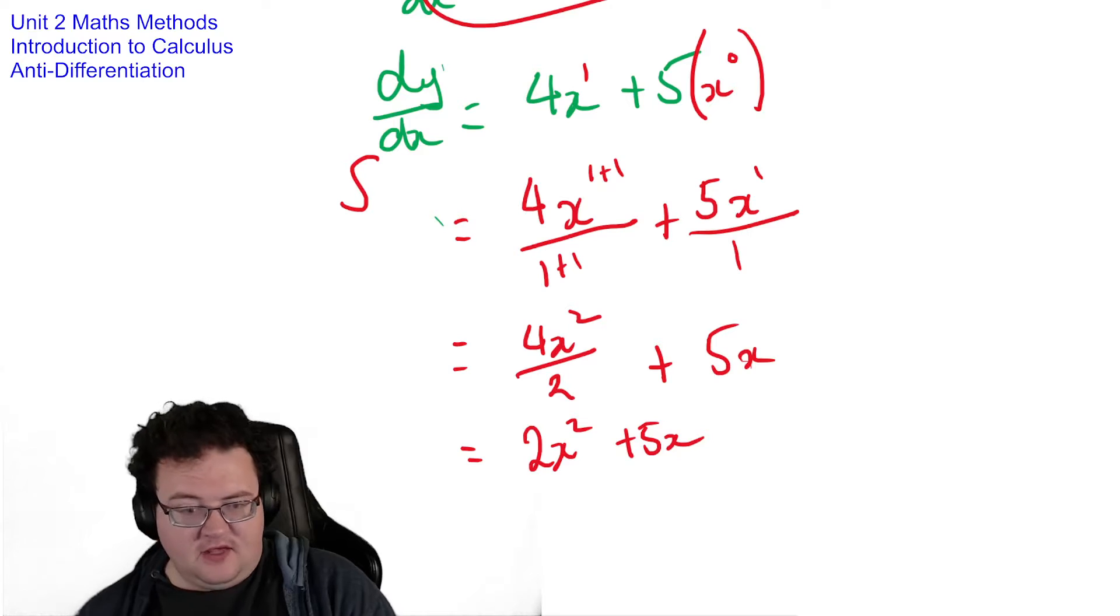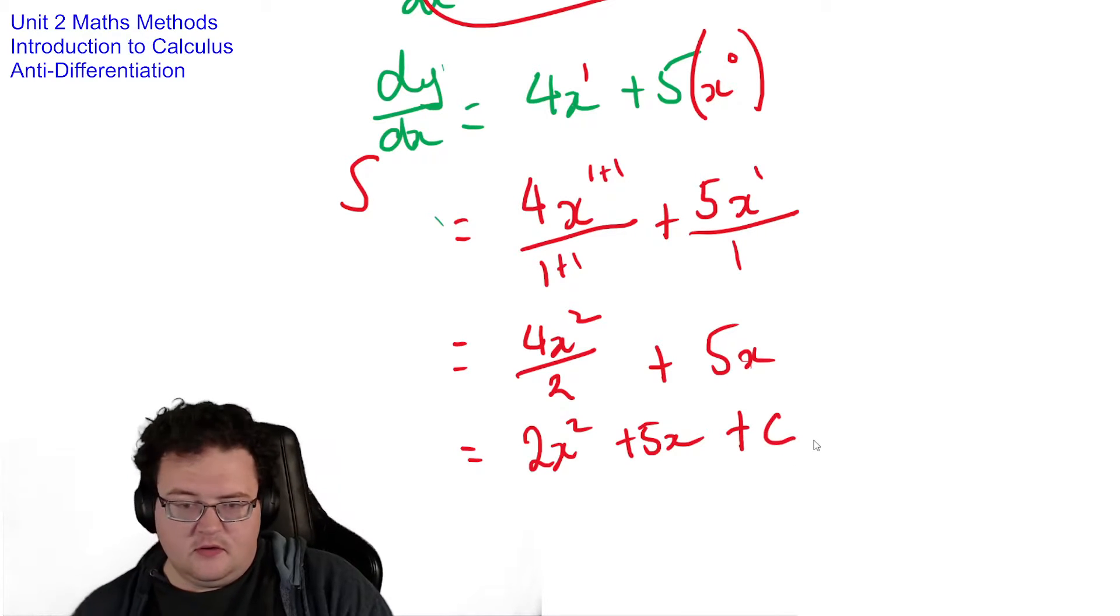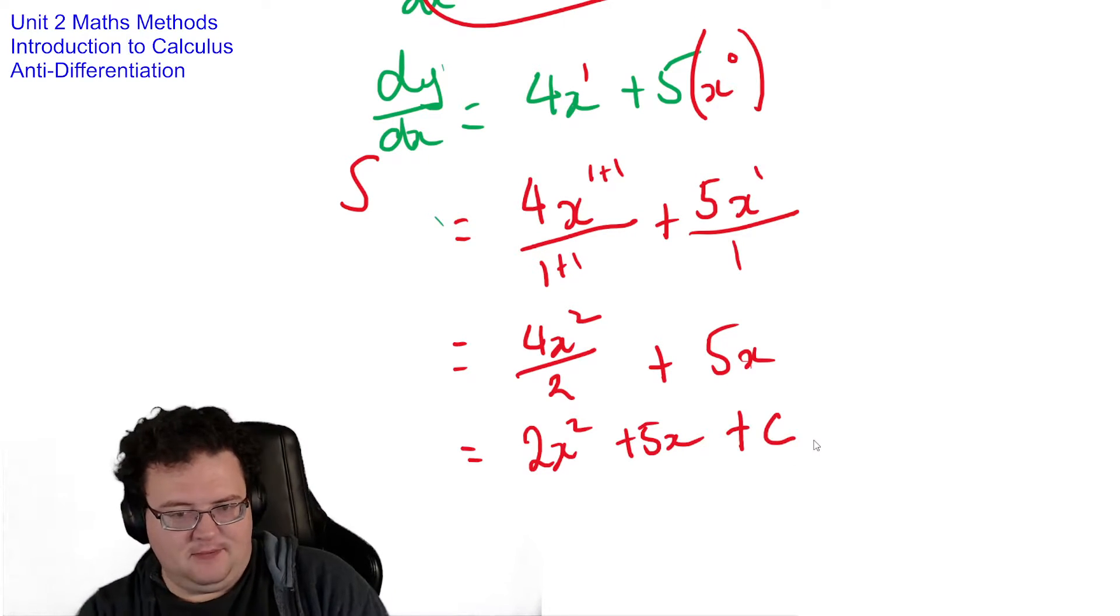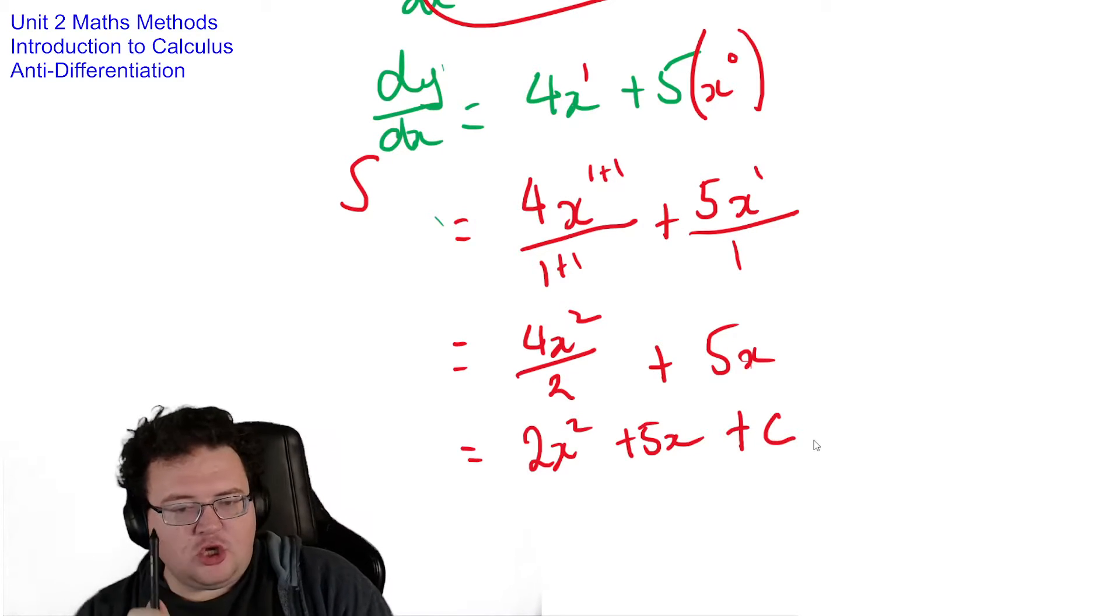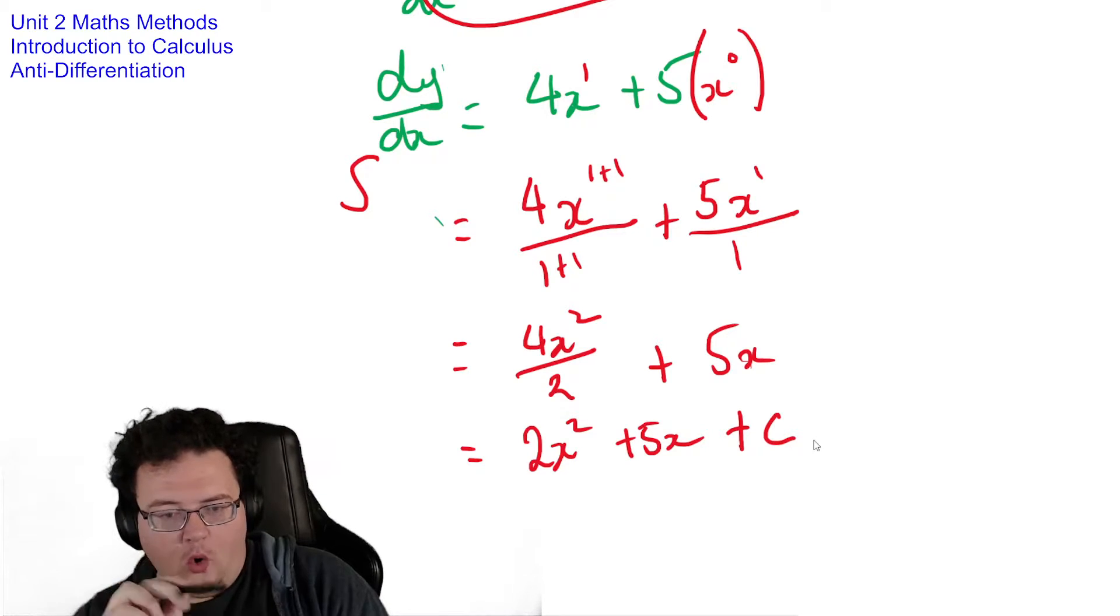But when I differentiate it, it doesn't matter what that number on the end was because that number gets dropped off. And the same thing happens here. And what I do is I represent that with a constant plus c. Whenever you are anti-differentiating, always, always, always put a plus c on the end.